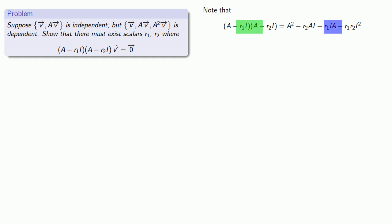But because matrix multiplication is not in general commutative, we can't equate AI with IA. Or can we?